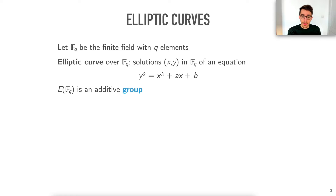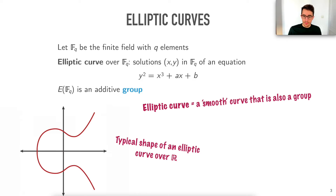These elliptic curves are curves with an additional structure. They are an additive group, so if you are given two points on the curve, you can add them to form a third point. We're talking about elliptic curves over finite fields, but if you want to draw a picture over the real numbers, a typical elliptic curve looks like this, and you have an addition on it: if you're given two points p and q, there is a way to construct a third point p + q.